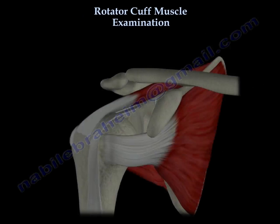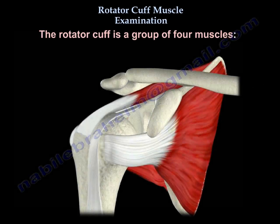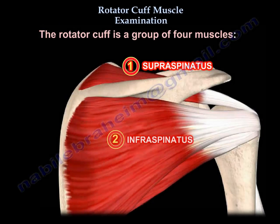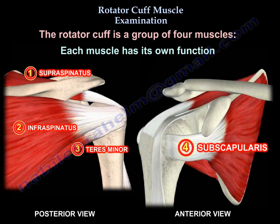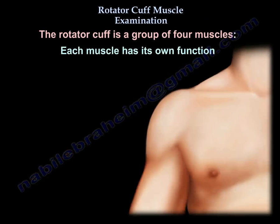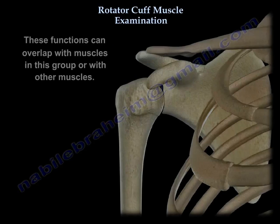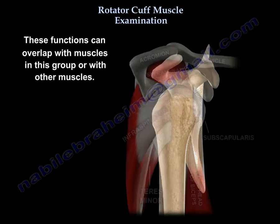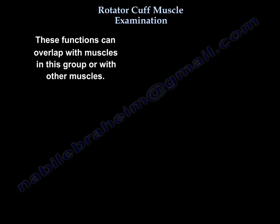Rotator Cuff Muscle Examination. There are four rotator cuff muscles: the supraspinatus, the infraspinatus, the teres minor, and the subscapularis. Each muscle has its own function. These functions can overlap with other muscles in this group or with other muscles.